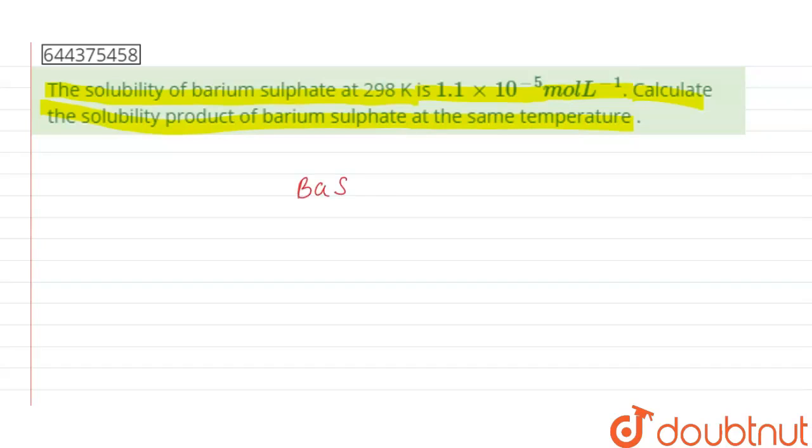Now here, given that barium sulfate, that is BaSO4, and the solubility of BaSO4 is given as 1.1 × 10^-5 mole per liter. Now when it's solubilized, it dissociates as